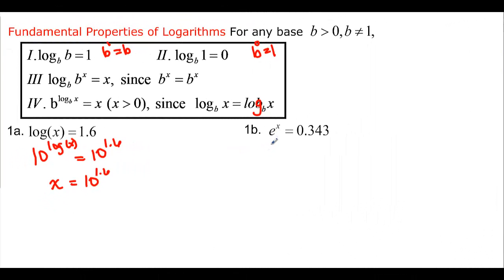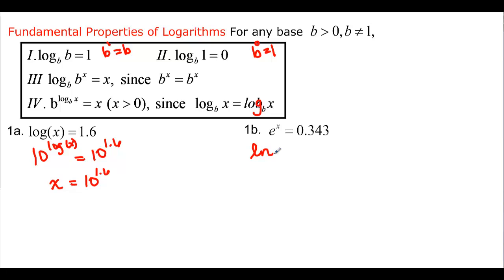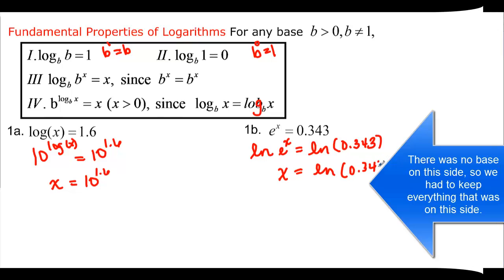Now we have an exponential and want to get to just x. Using property 3, with an e base I take the natural log of both sides. The natural log of e to the x equals the natural log of 0.343. Because the base of ln is e, the exponent is just equal to ln of 0.343, and we'd be done.